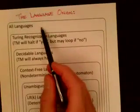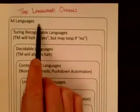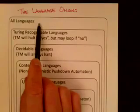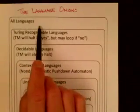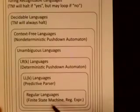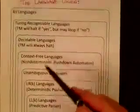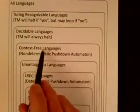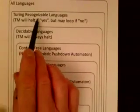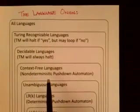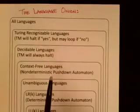Then we have Turing recognizable languages — languages where, if a string is in the language, the Turing machine will halt and say yes, but if the string is not in the language, the Turing machine may not ever halt. So we can determine whether things are in the language, but we have trouble determining when they're not. Finally, there's the class of all languages — for such a language, when given an example string we can't tell whether it's in the language or not, and we cannot write a program to determine that. Regular languages are concrete and simple; as you go up this hierarchy through LLK, LRK, unambiguous, ambiguous context-free, decidable, Turing recognizable, and all languages, things get more and more complex and frankly more interesting.